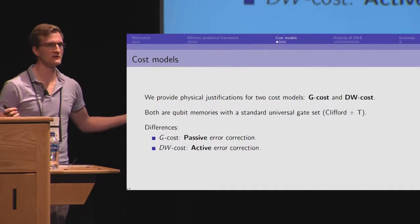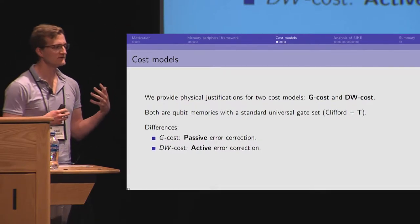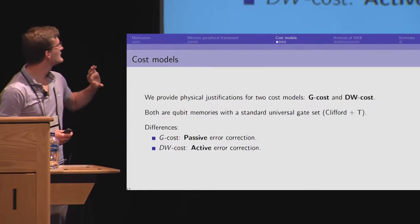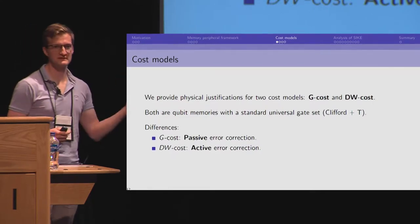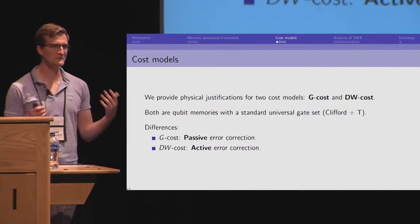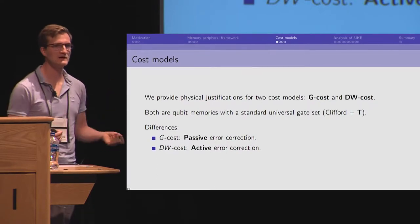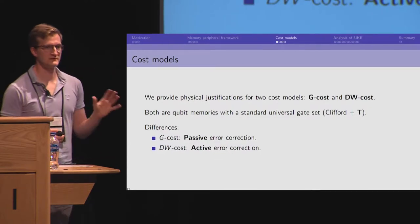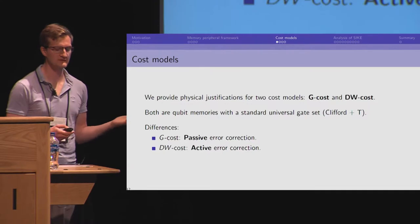And so, this is a very general framework. And we could fit different cost models and different assumptions into it. We provide two different assumptions which lead to these two costs, what we call the g-cost and the dw-cost. In both cases, we imagine qubit memories and standard quantum gates. And the difference between them is our assumption on error correction, whether it's passive or active.